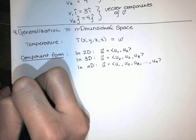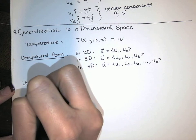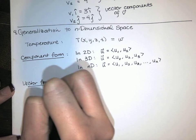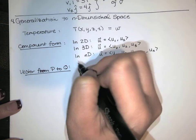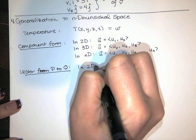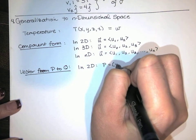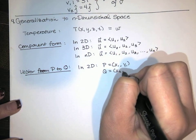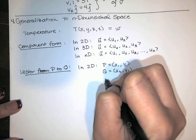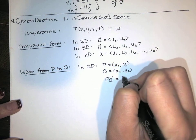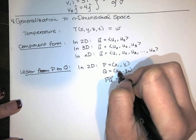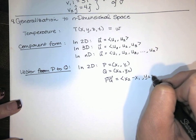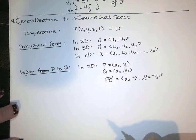We also talked about the vector from p to q. In 2D, my vector, or my point p might be x1, y1, and my point q might be x2, y2. Then the vector pq, as we've seen, comes from taking terminal minus initial. We do x2 minus x1, and y2 minus y1. That's 2D.